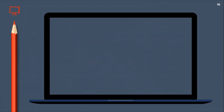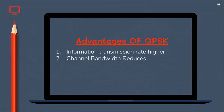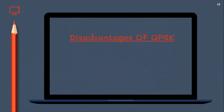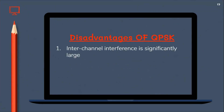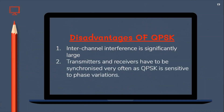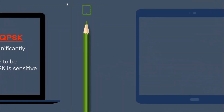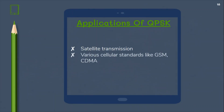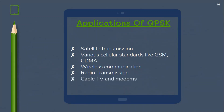Moving on to the last part of my video presentation. Some advantages of QPSK are: information transmission rate is higher, channel bandwidth reduces, lower error probability, and good noise immunity. Some disadvantages are: inter-channel interference is significantly large, and transmitters and receivers have to be synchronized very often as QPSK is sensitive to phase variations. Applications of QPSK include satellite transmission, cellular standards like GSM and CDMA, wireless communication, radio transmission, cable and TV modems, and cellular phone systems.